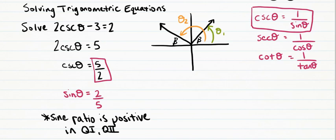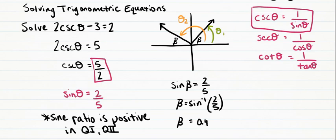To solve for beta, we use the positive ratio, so sine beta equals 2 over 5. Taking the sine inverse we get beta equals the sine inverse of 2 over 5, and so beta is approximately 0.4115 radians.